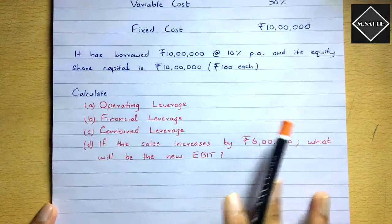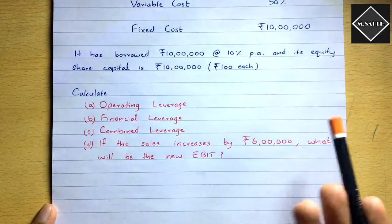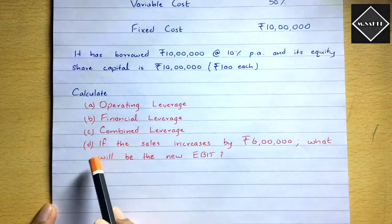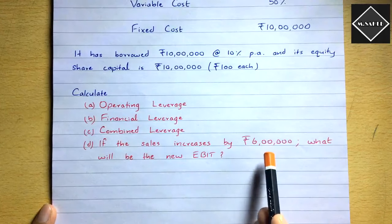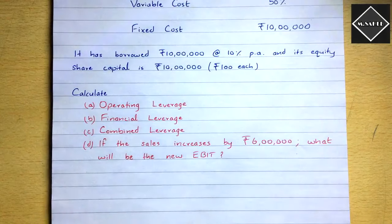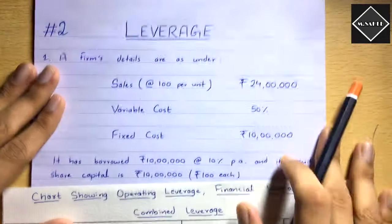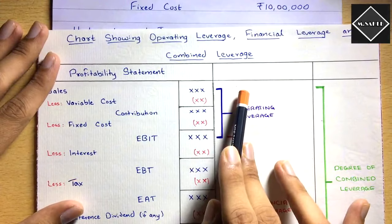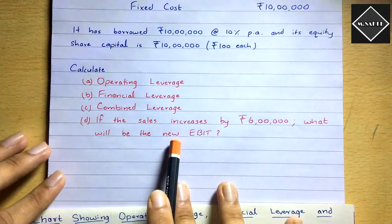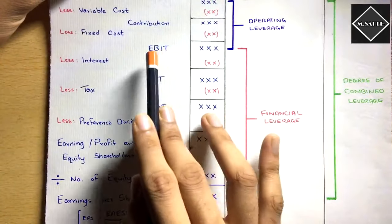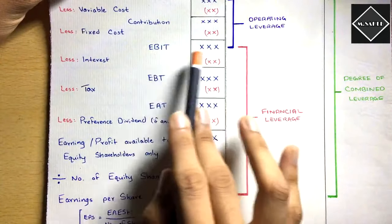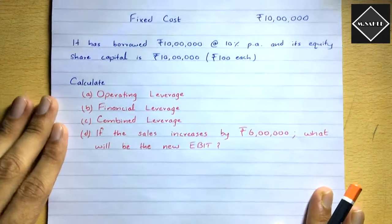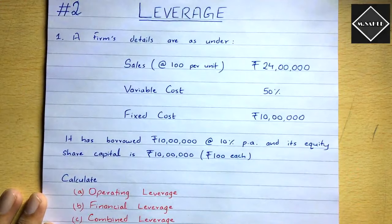We need to calculate: (a) operating leverage (DOL), (b) financial leverage (DFL), (c) combined leverage, and (d) if sales increases by 6 lakh, what would be the new EBIT? Currently sales is 24 lakh; if it increases by 6 lakh, it becomes 30 lakh. Let's solve — it's a simple problem that will help us understand and get a grip on the leverage chapter.